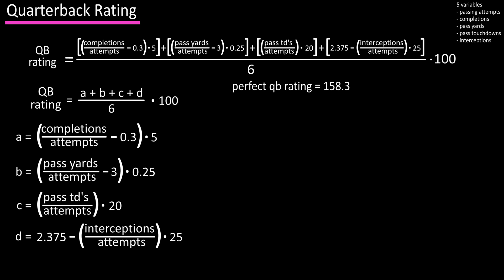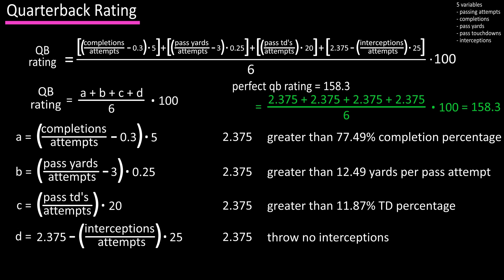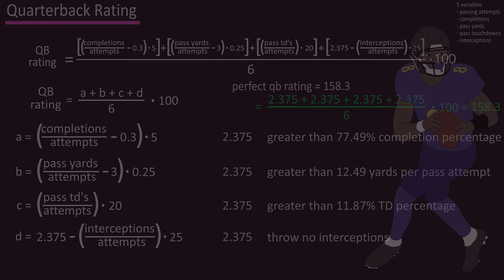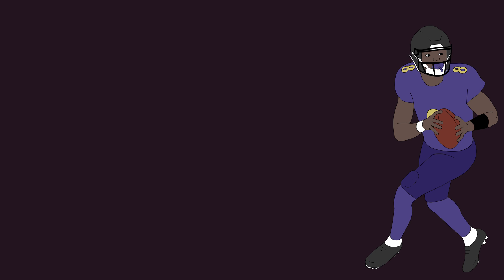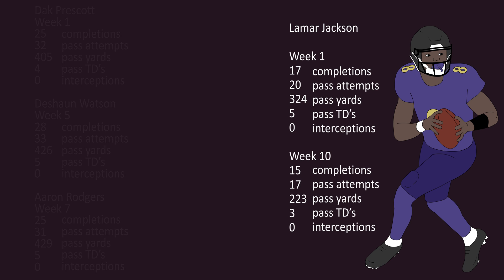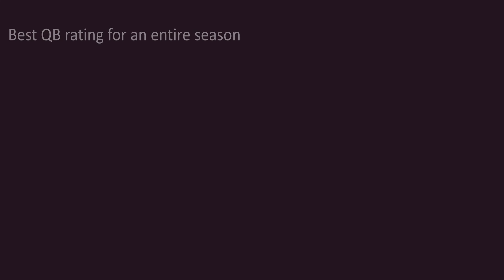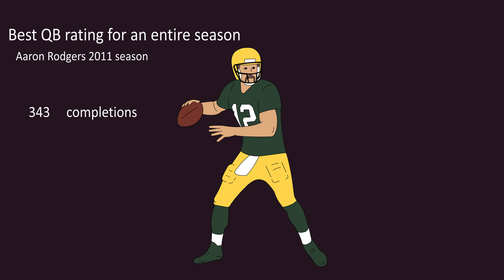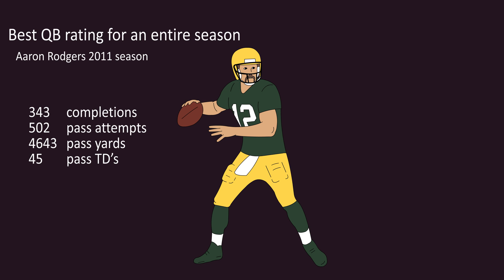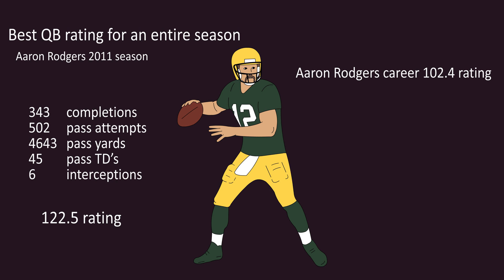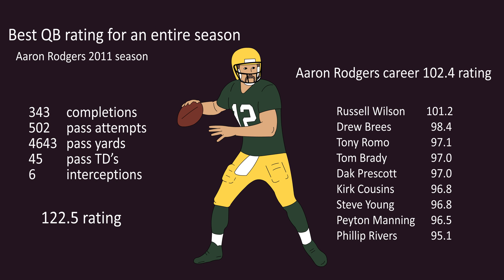A perfect passer rating is 158.3, with all variables A through D equaling 2.375. This was accomplished five times in 2019, with Lamar Jackson doing it twice. As of 2019, the best single-season quarterback rating was Aaron Rodgers in 2011: 343 completions on 502 attempts, 4,643 yards, 45 touchdowns, and 6 interceptions, for a rating of 122.5. Rodgers is also the career leader in passer rating at 102.4, with the top 10 career leaders shown on screen.